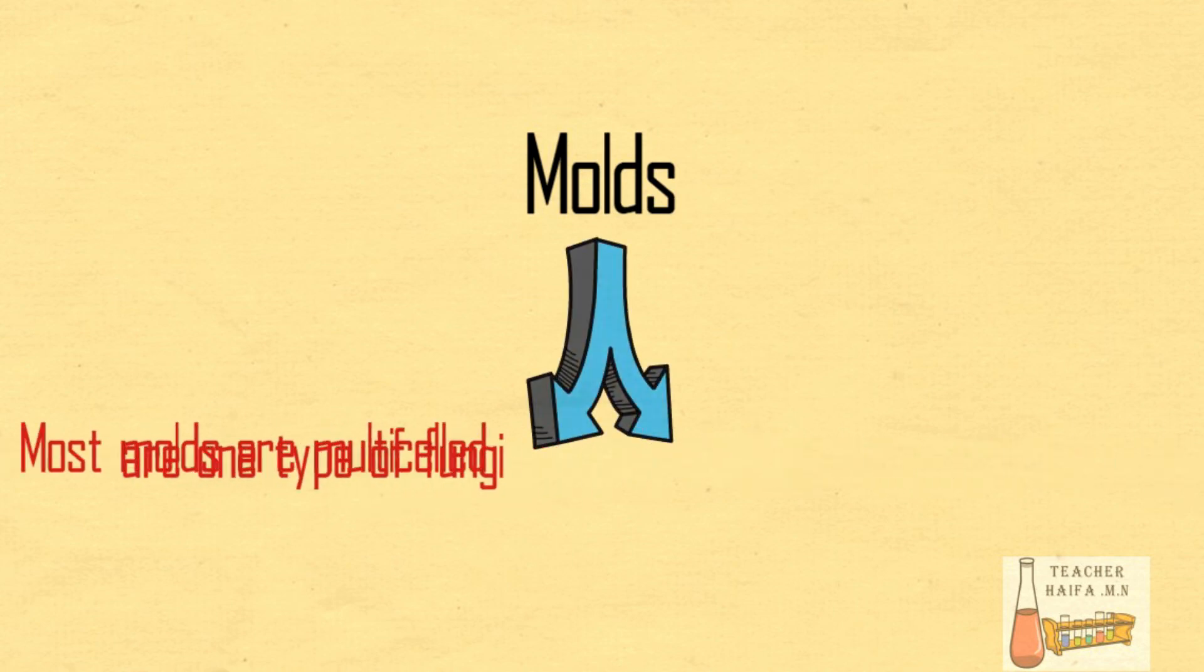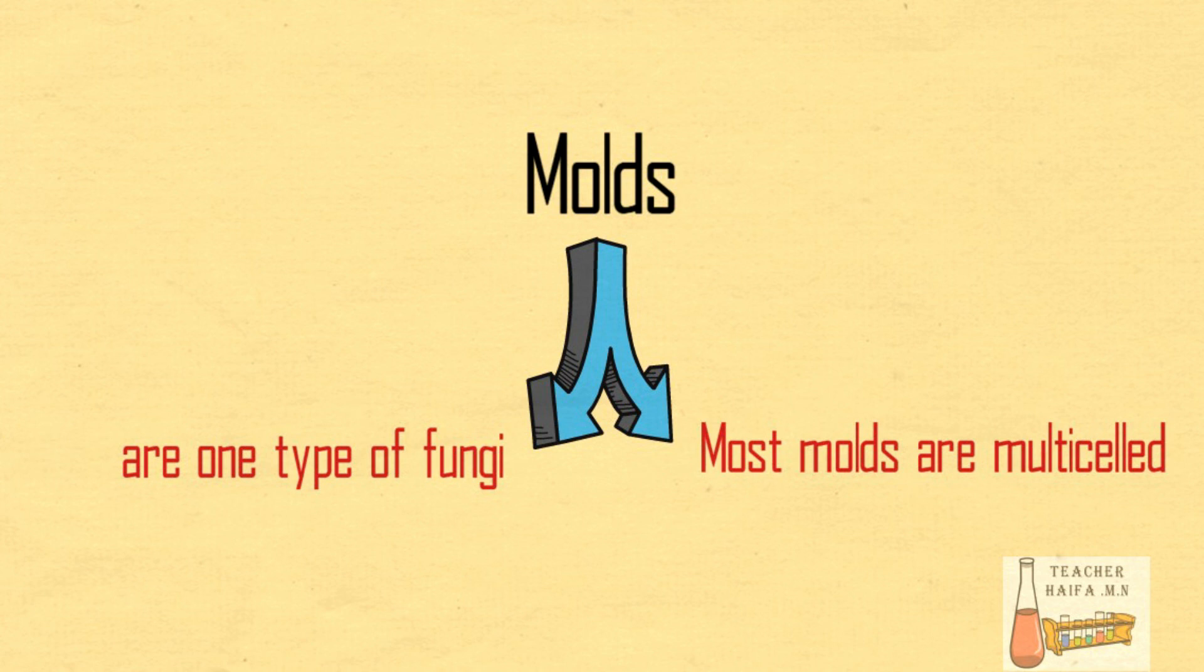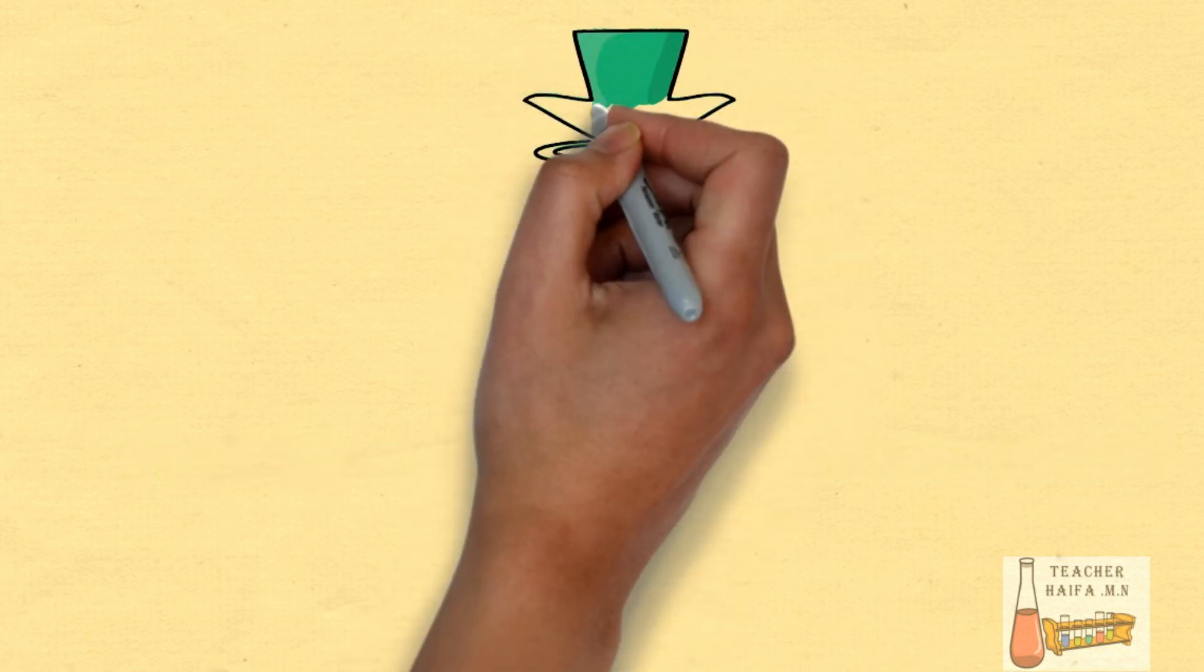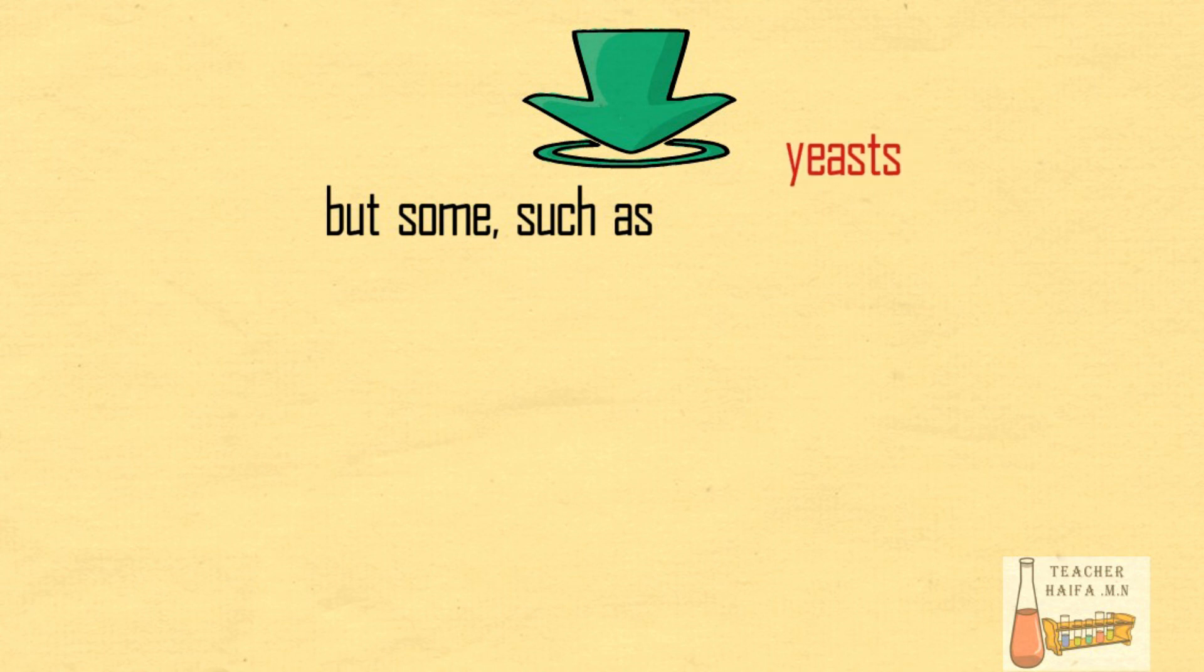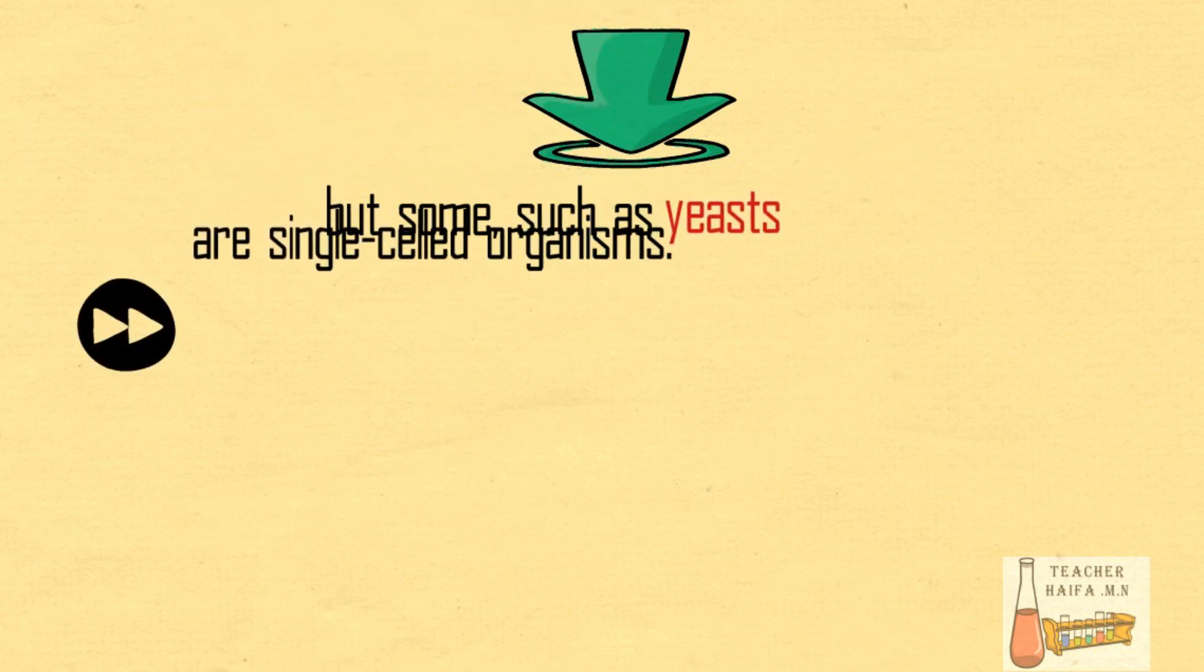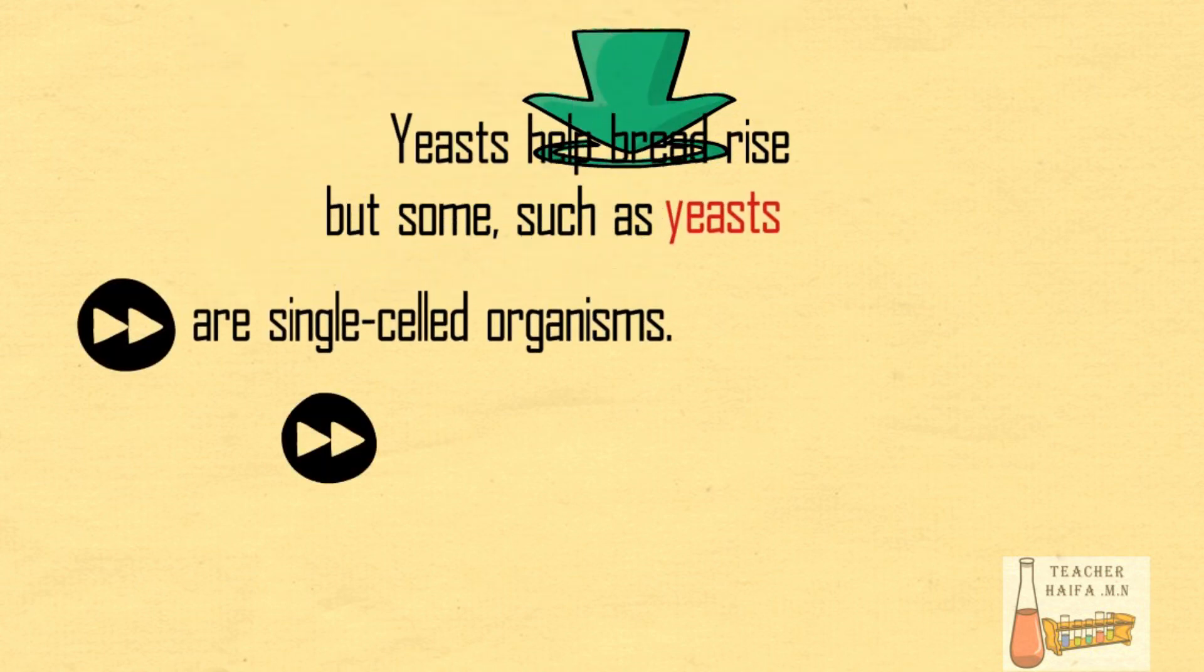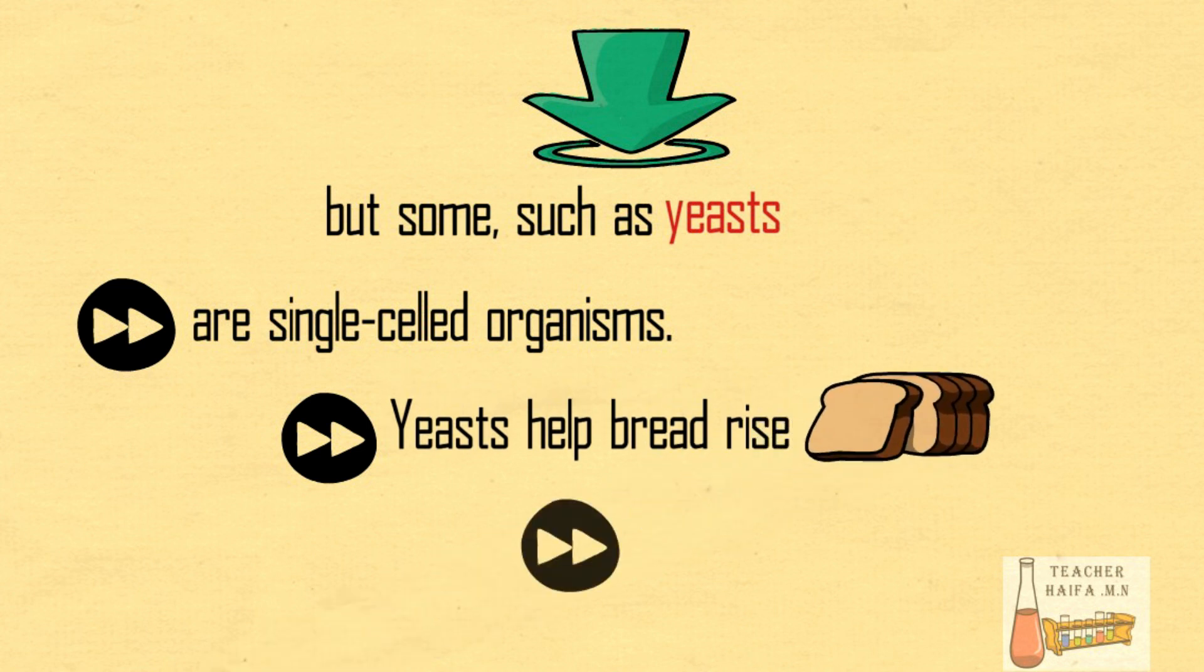Most molds are multi-celled. But some, such as yeasts, are single-celled organisms. Yeasts help bread rise and turn grains into alcohol.